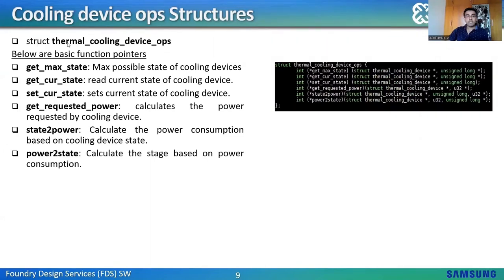Let's look at struct thermal_cooling_device_ops. This cooling device ops structure needs to be initialized before cooling devices are registered. Important function pointers include: get_max_state, which gives the maximum cooling state possible; get_cur_state, which gives the current state of the cooling device; set_cur_state, which sets the current state; get_requested_power, which calculates the power requested by the cooling device state; state_to_power, which calculates power consumption based on the cooling device state; and power_to_state.